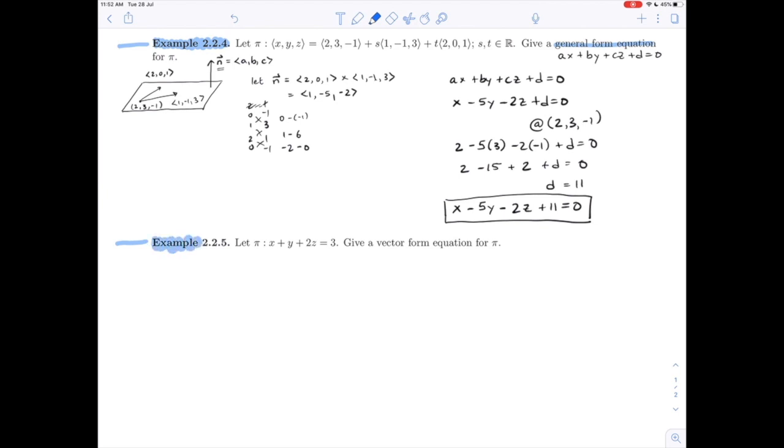Now going on to example 2.2.5. We're going the other direction. This time we are given a plane in general form and we want the vector form. So we are given, again a little sketch always recommended, we're given that we can take a normal vector as the vector I can read off of the coefficients, the vector (1, 1, 2). And we need to find both a point in the plane and two vectors in the plane to be able to give the vector form equation.